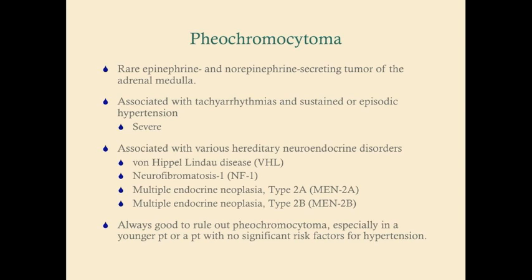It's always good to rule out pheochromocytoma in any patient with hypertension because getting a plasma metanephrine is very easy and cheap. It's particularly necessary to rule it out in younger patients or anyone without risk factors — patients who are young, don't smoke, have a healthy lifestyle, are not diabetic, and have nothing typically associated with hypertension.